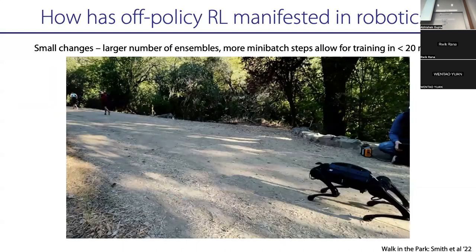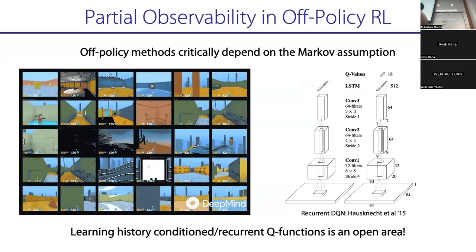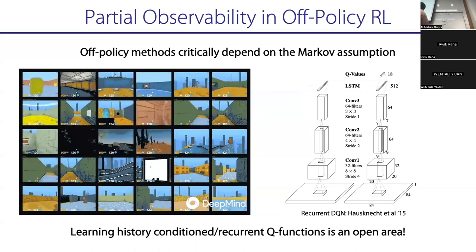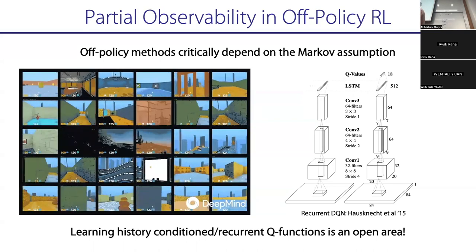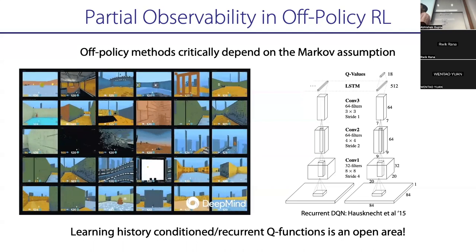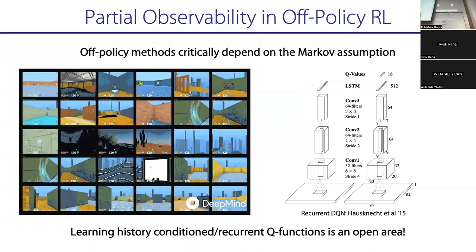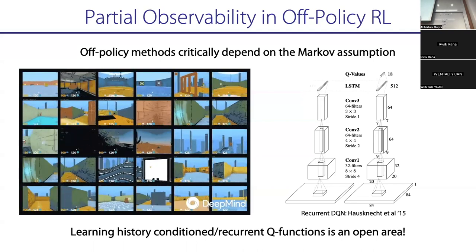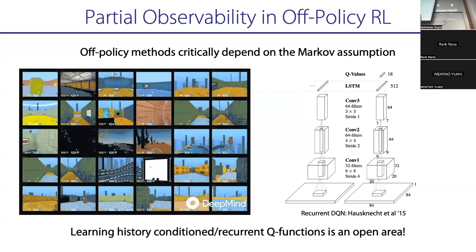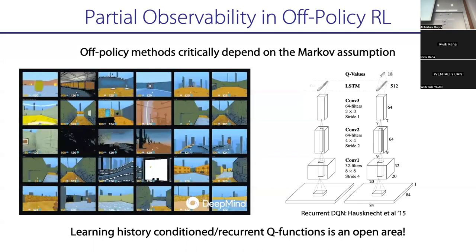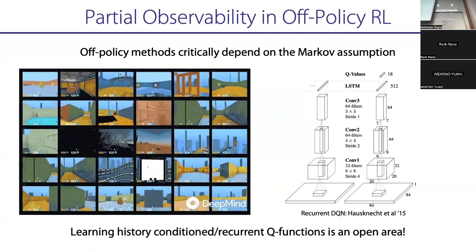Those are the open research problems. If anyone wants to talk about them, I'm happy to discuss after class or in office hours. All of these are super exciting research areas, so you should look into them. Now let's look at some videos of how well off-policy RL works for robotics.